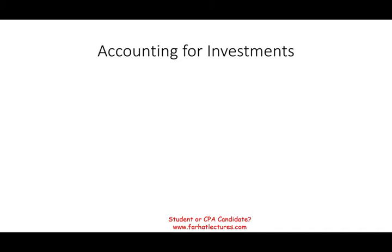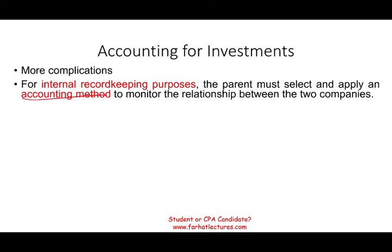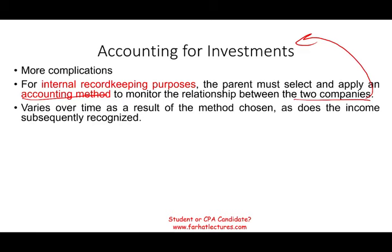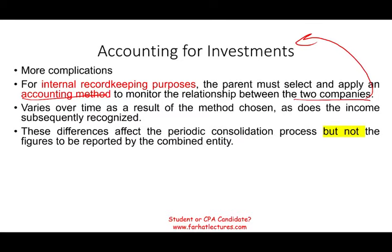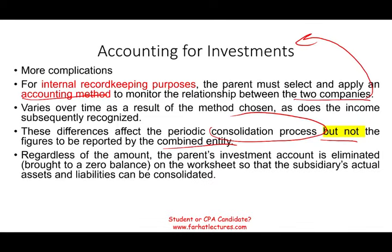Another account we need to be comfortable with is the investment account. For internal record-keeping purposes, we select an accounting method to monitor the relationship between the two companies through the investment account, because it represents the parent's investment in the subsidiary. The investment account will vary over time as a result of income and the method chosen. These differences are reflected only in the consolidation process, not in the combined entity figures. Regardless of which method we use, the investment account in the consolidated statements will always be equal to zero.